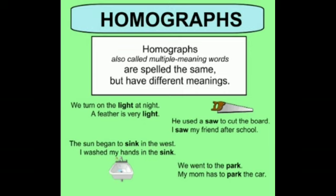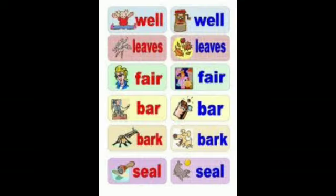Here are some more examples of homographs. 'Well' — first well refers to good health, whereas the other well is a water source. 'Leaves' means to go away, and another meaning of leaves refers to parts of a plant. 'Bark' — bark of a tree and bark of a dog.